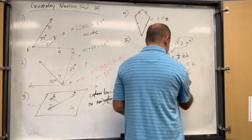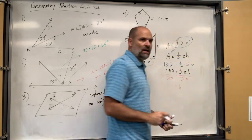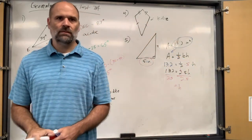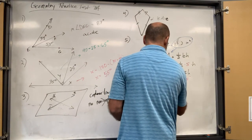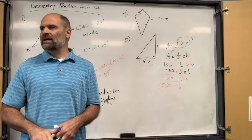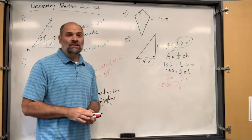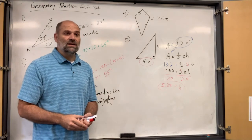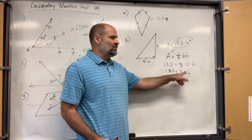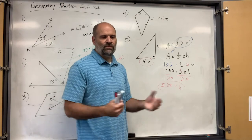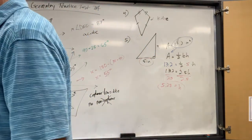Divided by 2.5, you get approximately 5.28 inches for the height. Decimals and fractions always complicate things, but it's still the same rules — what times 2.5 equals 13.2 is just a division problem.